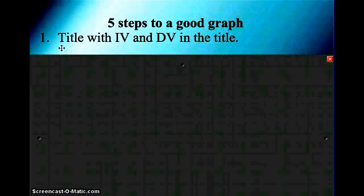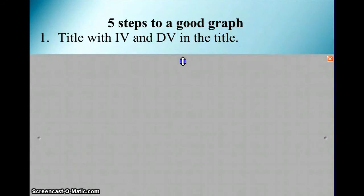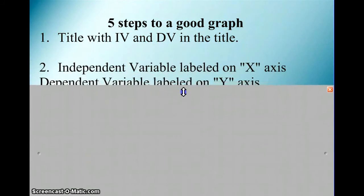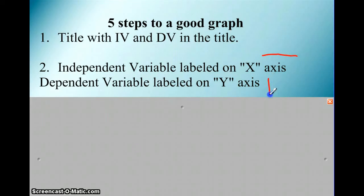The first thing is you're going to need the title with the independent and dependent variable in the title. So that would be like the effect of the type of liquid on the dissolved time of Alka-Seltzer. Number two, you're going to need your independent variable labeled on the x-axis and your dependent variable labeled on the y-axis. Remember x-axis is this way, y-axis is going this way. Make sure those are labeled.